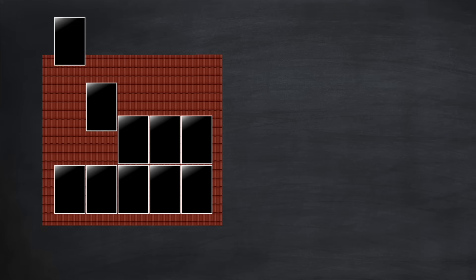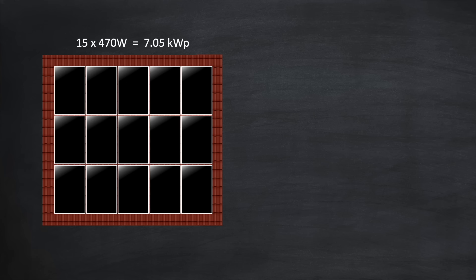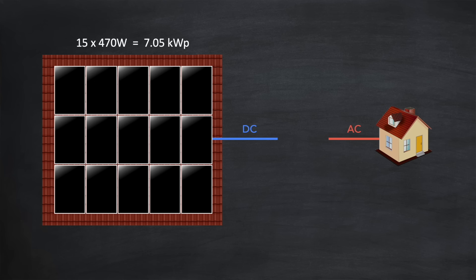Here is an example solar array. It comprises 15 panels with each panel rated at 470 watts, to give a total peak output of approximately 7 kilowatts. The power generated by our solar array is direct current or DC, but the home that will use that power requires alternating current or AC. So to convert DC into AC we use a device called a string inverter. This inverter will have a maximum AC power rating — in this example we'll use 5 kilowatts. It might seem strange to have a string inverter with a lower AC power rating than the maximum DC input power, but this is common and it's called oversizing.